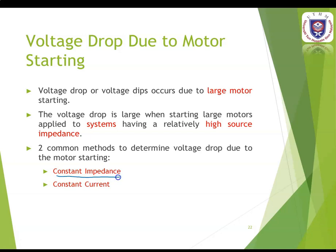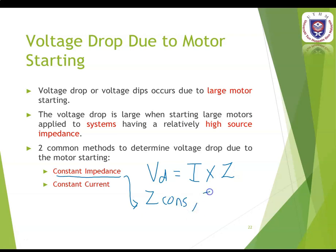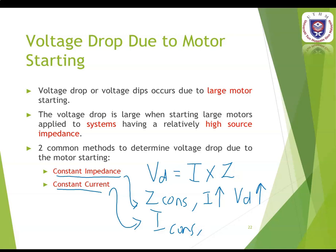For the constant impedance method, voltage drop is equivalent to current times impedance. When impedance is constant and current I is high, therefore the voltage drop will also be high. For the constant current method, current is constant. So when the impedance is high, the voltage drop will also be high.